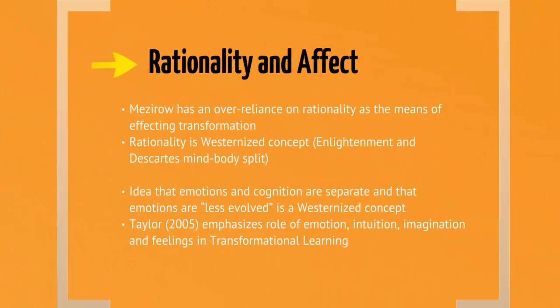Another key concept in transformative learning is rationality and affect — and we've talked about this when we spoke about emotions, logic versus emotion. Mesro tends to have an over-reliance on rationality as the means of affecting transformation. That emphasis on logic and the intellectual mind, the left-brain thinking, is that rationality is kind of a westernized concept. Historically we talked about the Enlightenment and the mind-body split that Descartes talked about — so we really are in a western concept that rationality is a superior way of thinking, which is a big cultural bias. This idea that emotions and thinking are separate, and that emotions are sort of less evolved, is very westernized.